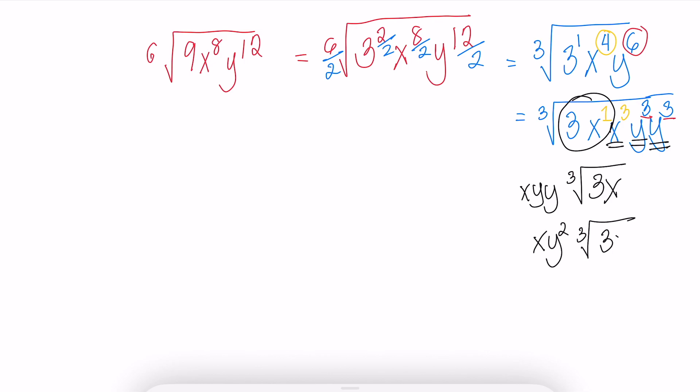Simplify it further, and we will have this answer, letter B: xy squared cube root of 3x.